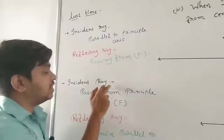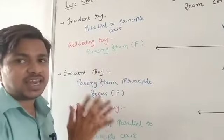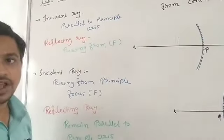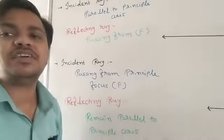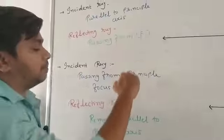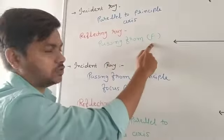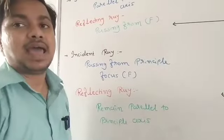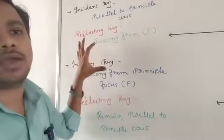The second specific incident ray: when the incident ray passes from the principal focus, after reflection the ray remains parallel to the principal axis. For a convex mirror, we take the ray going towards the principal focus, and the reflecting ray remains parallel to the principal axis. Both of these are inversions of each other — when parallel to principal axis it passes from principal focus, and when passing from principal focus it remains parallel to principal axis.